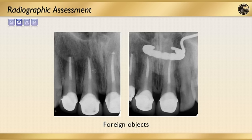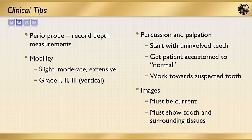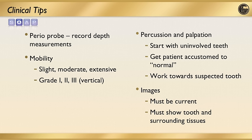Where foreign objects can be removed — such as nose piercings and lip piercings — have patients remove them so the image is unobstructed. Reviewing clinical tips: the periodontal probe is your first instrument; record depth at six points at least, and assess mobility of the tooth as slight, moderate, or extensive — grade three mobility always refers to a tooth that can be compressed in an apical direction. For percussion, palpation, and temperature testing, start with uninvolved teeth, be random, and work towards the involved tooth to get the patient accustomed to normal. For imaging, always have a current image showing both the tooth and all surrounding tissues, and if there's a lesion, show the entire lesion.